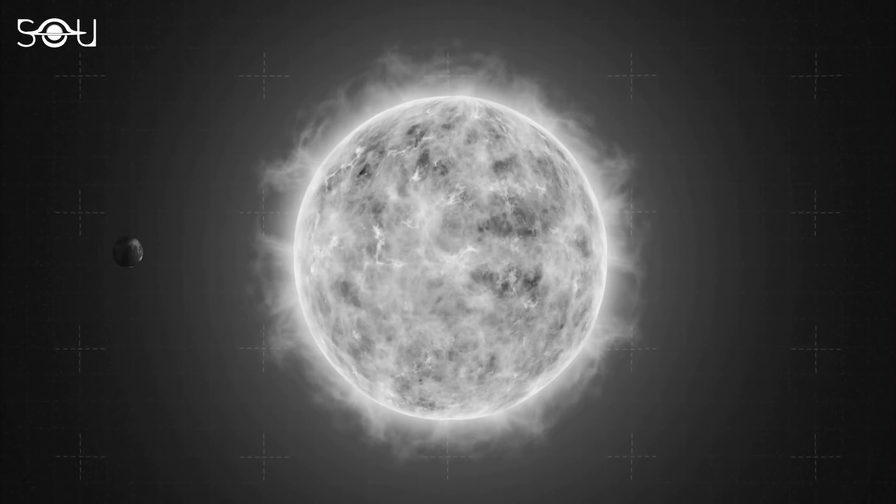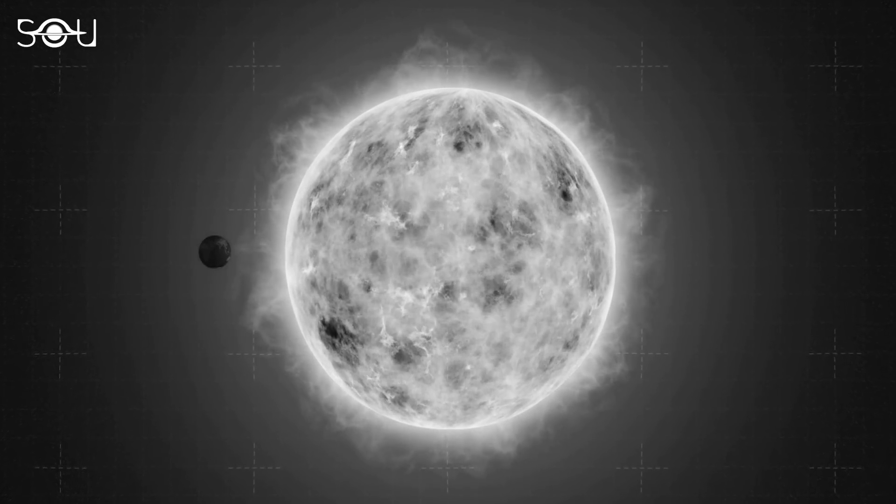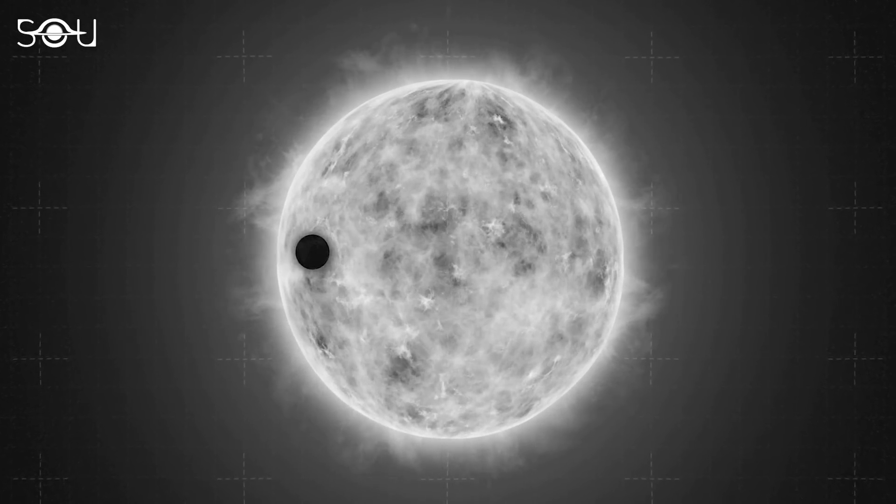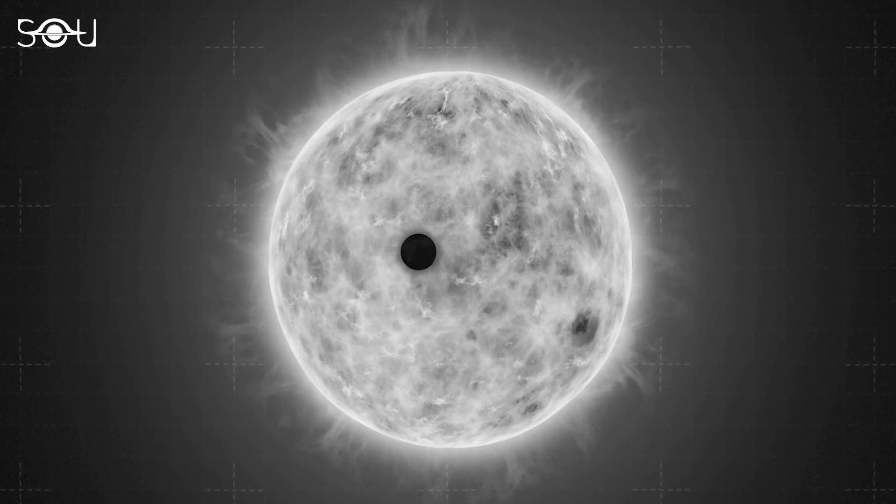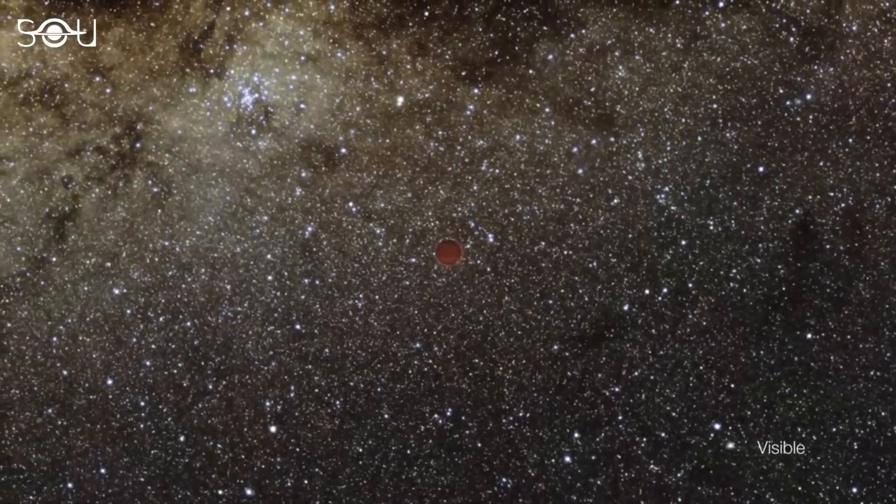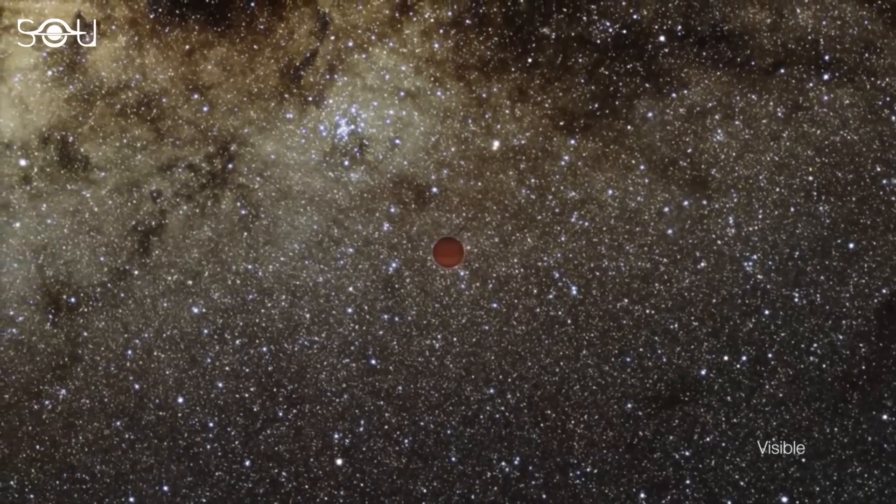So far, most of the planets that have been detected are roughly 10,000 to 1 million times fainter than their host star, and undoubtedly, a population of planets is even fainter than that.